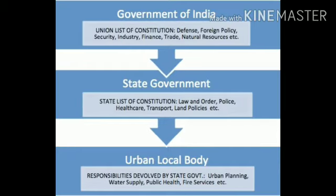Various levels of government. The government has a lot of things to do, but how does it manage to do all these things? For this purpose, the government works at different levels — the local level, the state level, and the national level. At the local level it works at the grass roots, starting from localities, villages, towns and cities. At the state level its work covers an entire state like Uttar Pradesh and Andhra Pradesh.